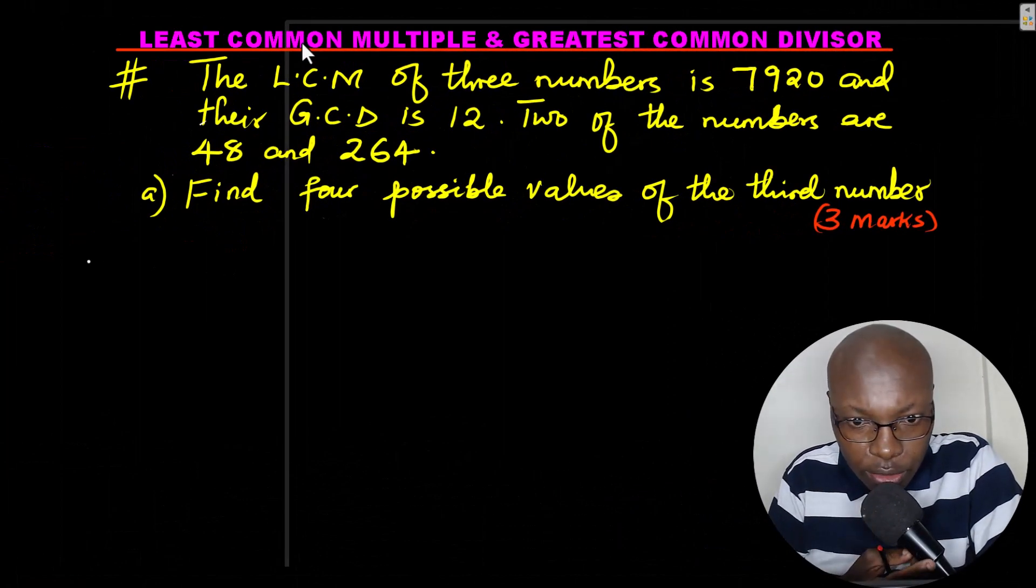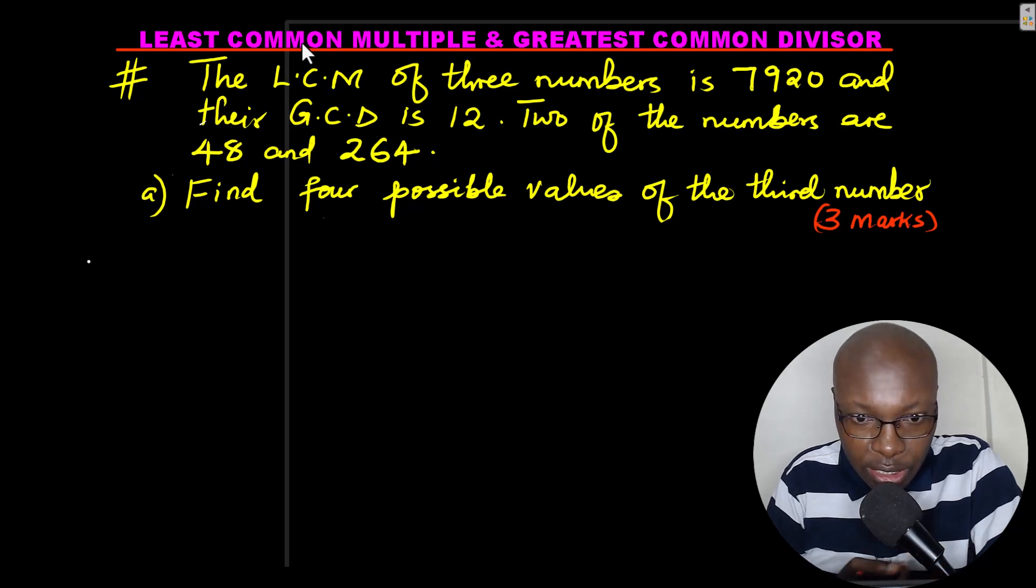Hello and welcome. Let's solve this question on least common multiple and greatest common divisor, that is LCM and GCD. The question reads: the LCM of three numbers is 7920 and the GCD is 12. Two of the numbers are 48 and 264.